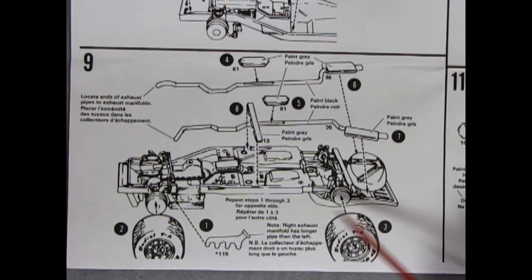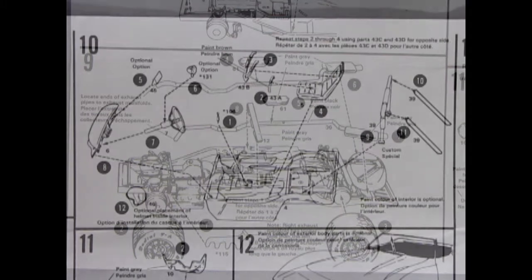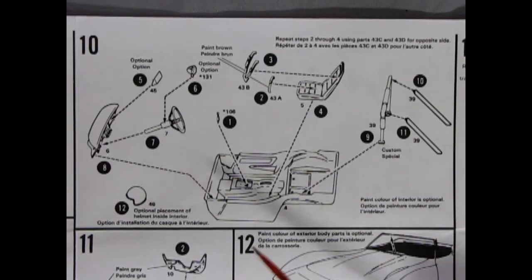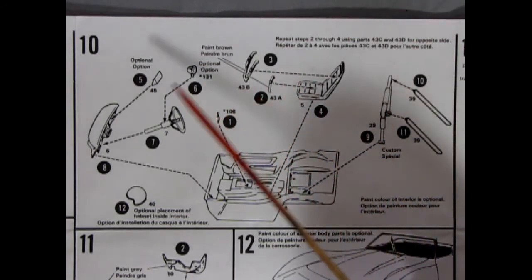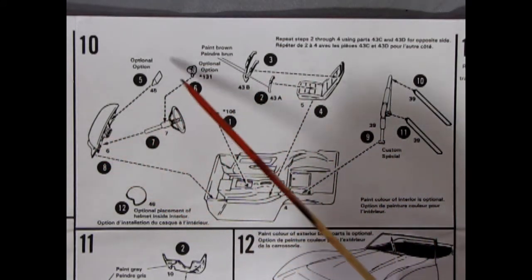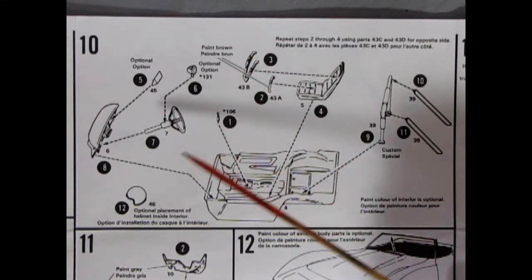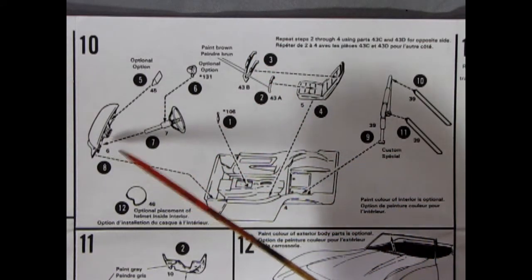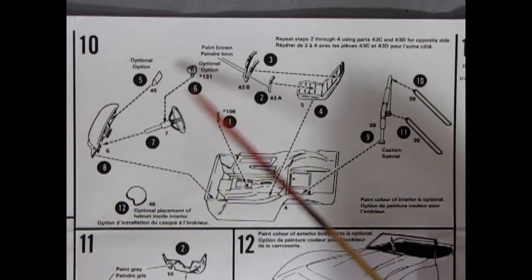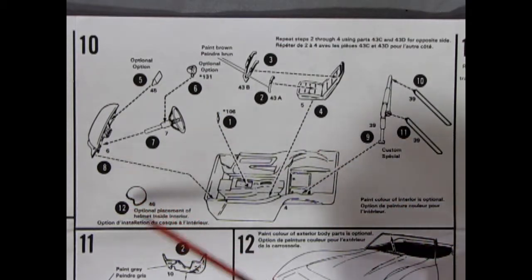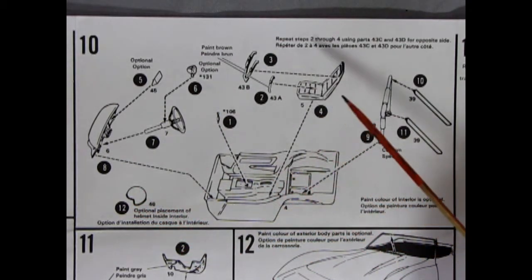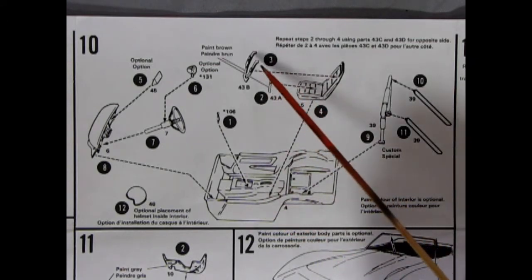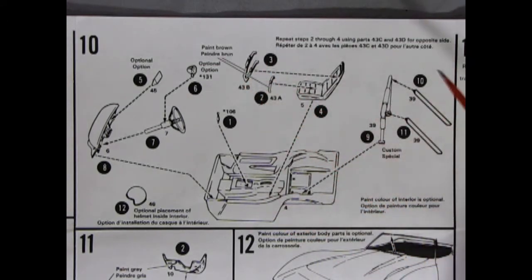And then we have our wheels being glued into place. Panel 10 shows our interior going together and you do have a choice of stock or racing as we can see here. So we have our dashboard with an optional piece gluing on here, our steering wheel and console, and then the optional tachometer. We have a race helmet which you can place anywhere in the car. Then you have your stock bucket seats going in place and you can also add in the four-point racing harness.